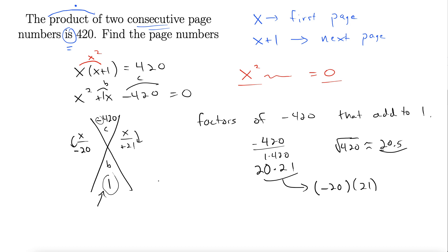So we have X minus 20, X plus 21 equals 0. Set each one of these equal to 0. X minus 20 equals 0. X plus 21 equals 0. That's the zero factor property. This gives us X equals 20. X equals negative 21. Well, these are page numbers. So I don't recall ever seeing a book with negative page numbers. So I'm going to ditch this term.